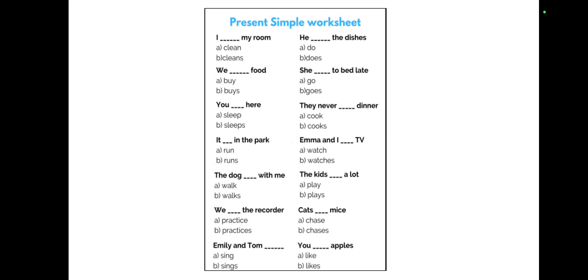Let's do some exercises with this simple worksheet about present tense. Number one uses 'I' — remember, I, you, we, they use the base word, so the answer is 'a.' Number two uses 'we' — same rule, I, you, we, they use the base word, so it's 'buy.' Number three uses 'you' — again, base word, so the answer is 'sleep' — you sleep here.